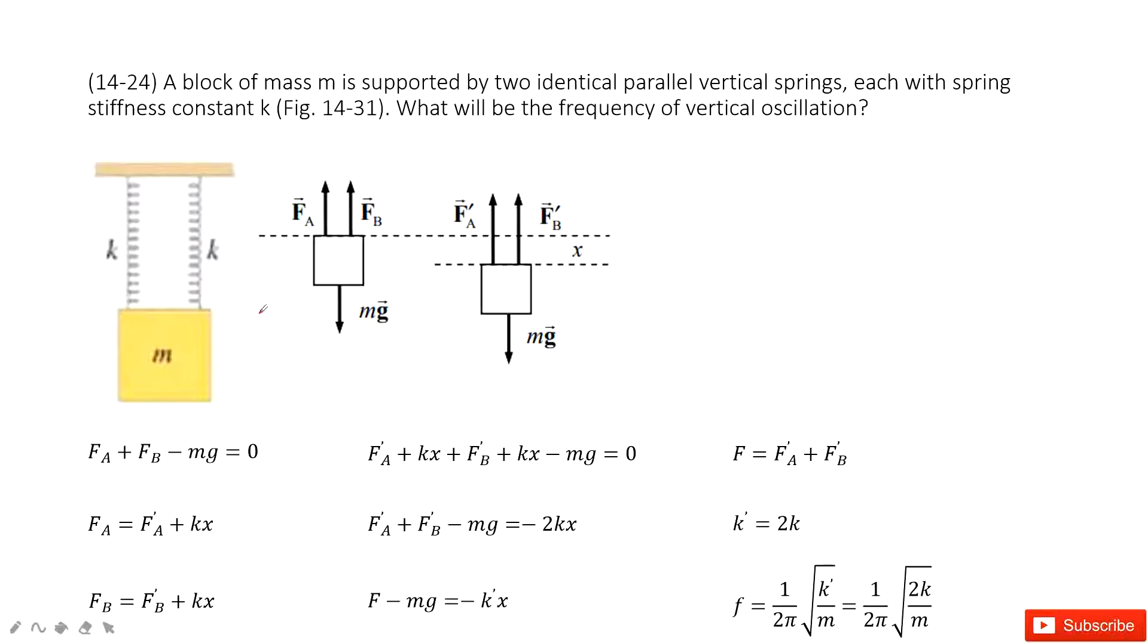In this problem, we have a block of mass M supported by two identical springs, both with spring constant k. We need to find the frequency for these vertical oscillations.